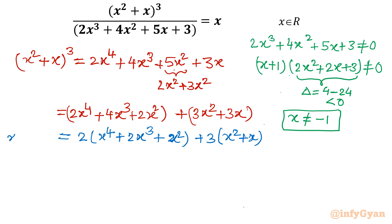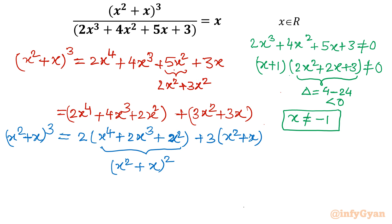Observing the LHS, we have (x² + x)³. On the right side, taking 2 common from the first bracket gives 2(x⁴ + 2x³ + x²), which equals 2(x² + x)². Taking 3 common from the second bracket gives 3(x² + x). So the equation becomes: (x² + x)³ = 2(x² + x)² + 3(x² + x).